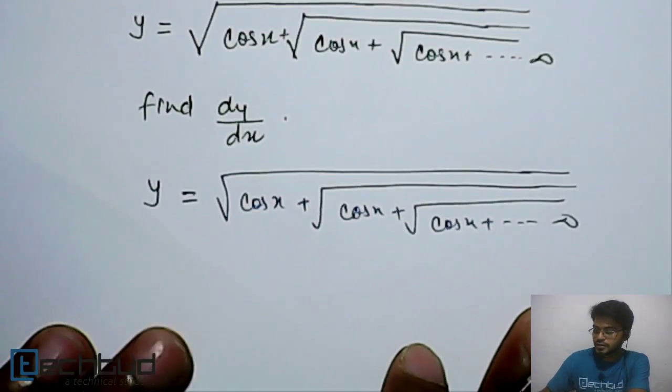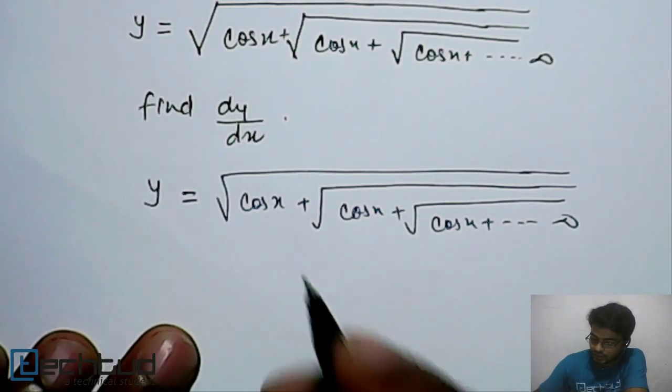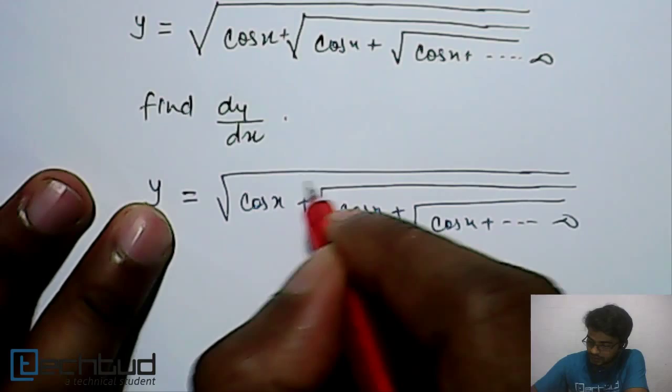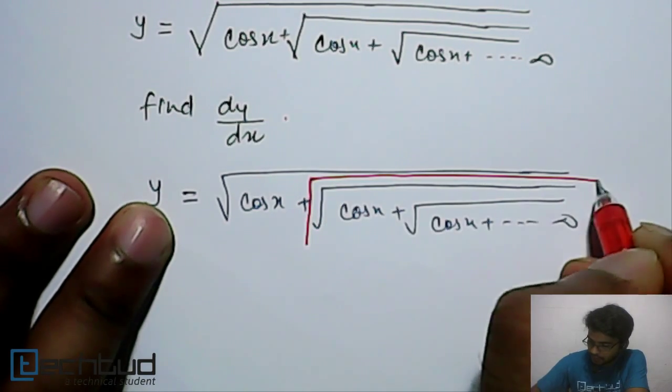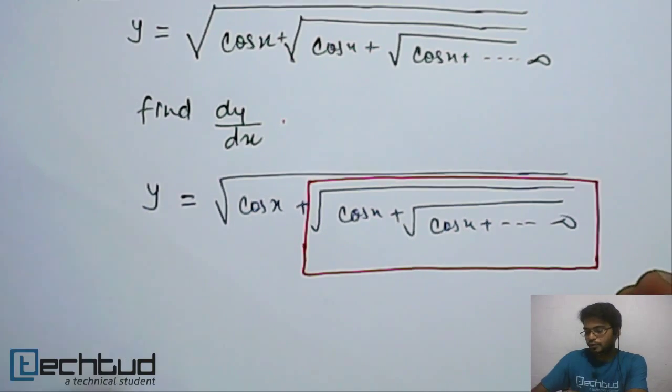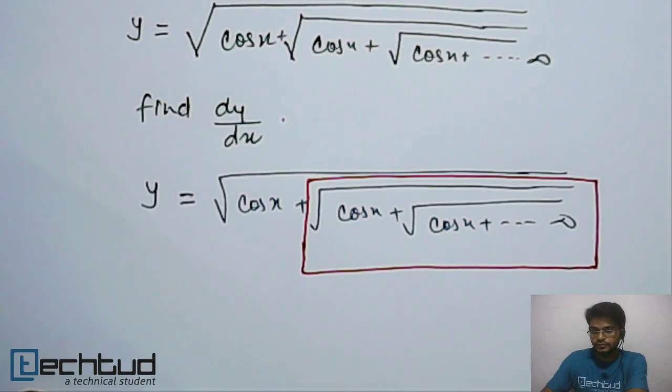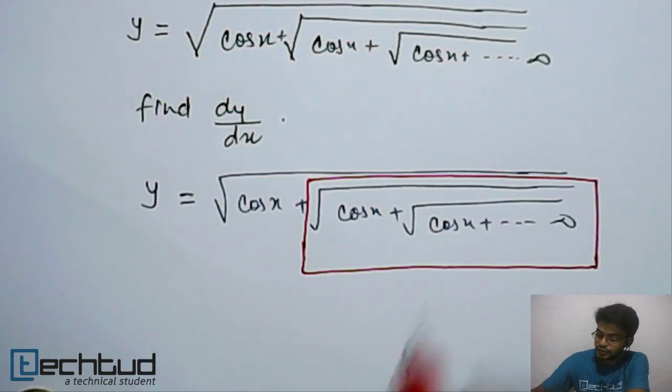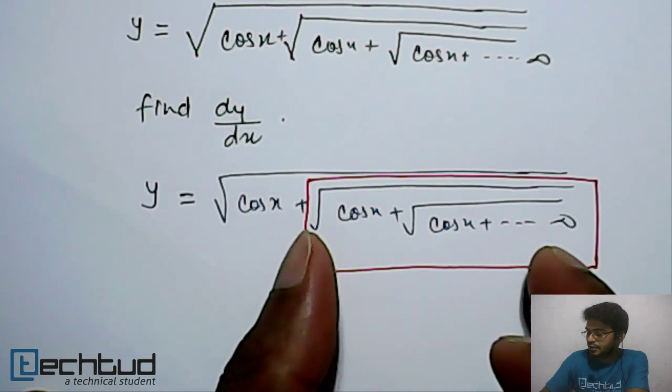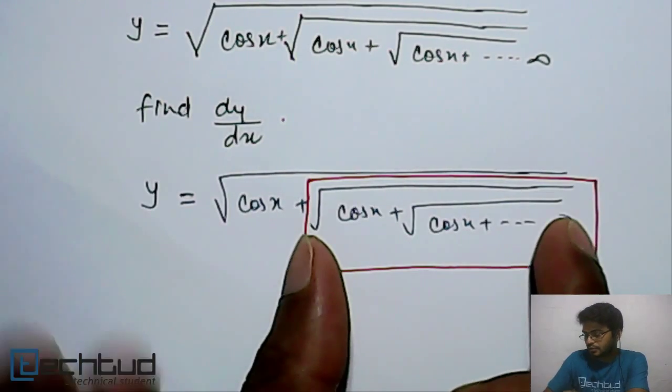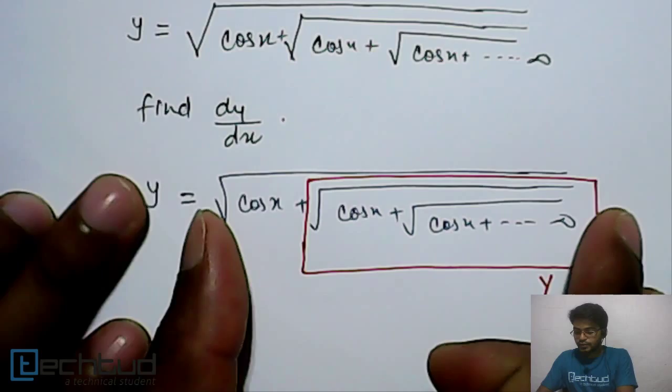Now what we have to do is, if you see, let's forget the entire thing and just concentrate on what I am boxing here, this expression in the box. So what will this expression be? If you concentrate, this is again—this entire expression will be y because this is infinity, right? The entire expression is also y, and this boxed expression is also y. The entire thing is y.